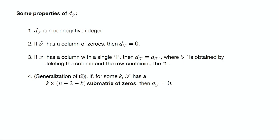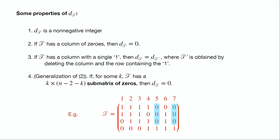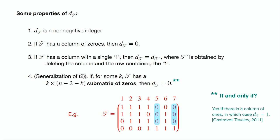There's a generalization: if you have a submatrix of zeros whose dimensions add up to size n minus 2, then the cross-ratio degree is zero. For example, not a 4-by-1 submatrix but a 3-by-2 submatrix of zeros implies the cross-ratio degree will be zero. Whether this last condition is an if-and-only-if is an open problem. It's related to some unknown things about matroids. The only known case is when some column contains all ones, which follows from a result of Kastorv and Tavelev.